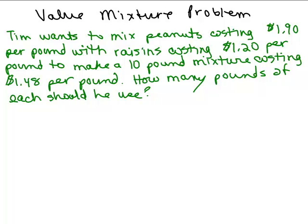All right, I'm going to do this with one variable. So, we have two things we're mixing, peanuts and raisins. So, let's just draw a little picture here.